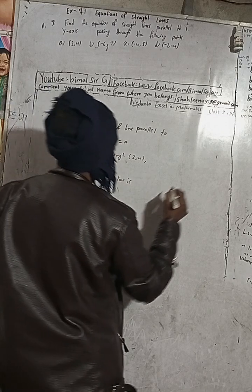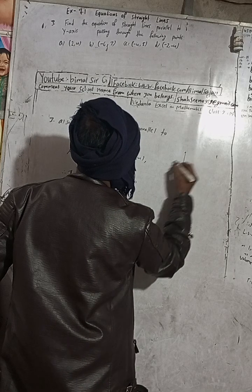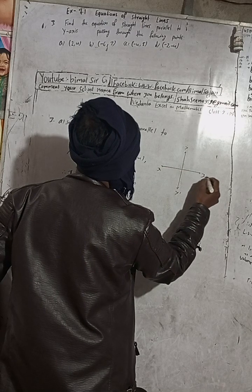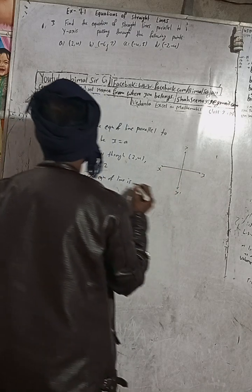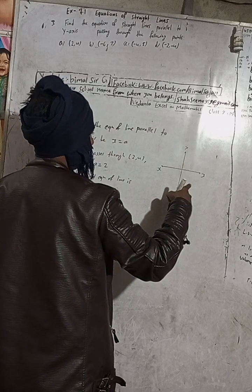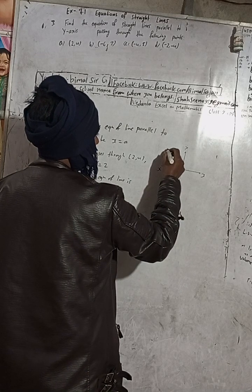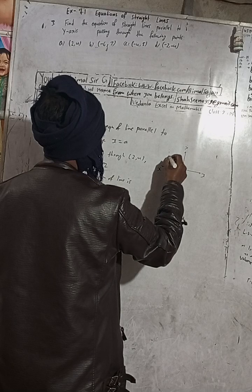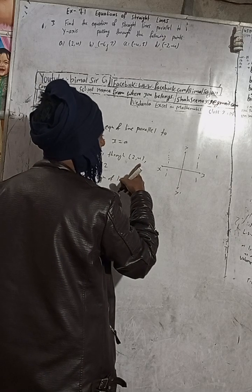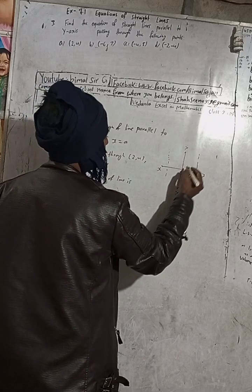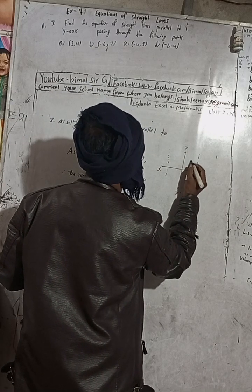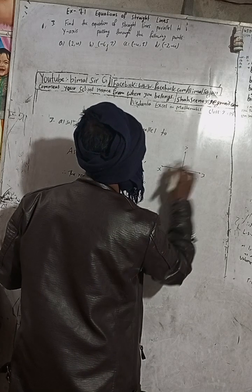Now to understand the figure: draw the coordinate axes x, x-dash, y, y-dash. A line parallel to the y-axis can be either on the left or right side. The point given is (2, 4) — both coordinates are positive, so the line is on the right side. Two units along x and four units along y: one, two for x and one, two, three, four for y.